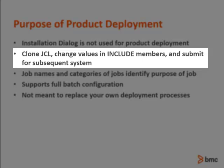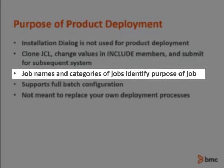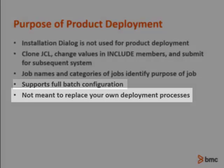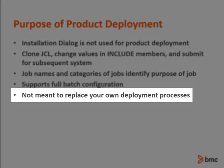Or you might want to use a different HLQ for your runtime datasets or need to specify different subsystem values. The job names and categories of the jobs identify which jobs pertain to your specific deployment scenario. All configuration options are supported in Batch JCL, so the installation system is not required for any deployment activities. If you already have your own methods for deploying products to other environments, you can continue to use those processes. This is only intended as guidance if you are not familiar with the products and requirements to deploy to other environments.